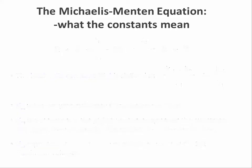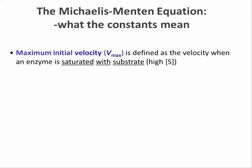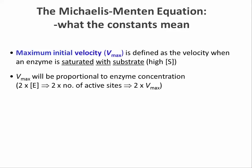The maximal initial velocity, Vmax, is more intuitive to understand. It's equal to the initial velocity of a reaction where the enzyme is fully saturated with substrate. Vmax is directly proportional to enzyme concentration. That is, if we double the enzyme concentration, we will have twice as many active sites and so we can form product at twice the rate.